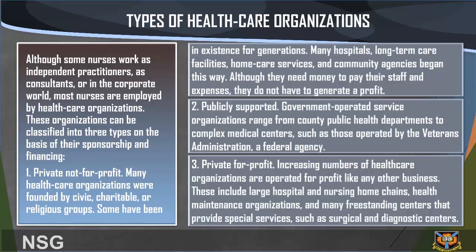Although some nurses work as independent practitioners, as consultants or in the corporate world, most nurses are employed by healthcare organizations. These organizations can be classified into three types on the basis of their sponsorship and financing. The first is private not-for-profit: many healthcare organizations were founded by civic, charitable, or religious groups, some in existence for generations. Hospitals, long-term care facilities, home care services, and community agencies began this way. Although they need money to pay their staff and expenses, they do not have to generate a profit.